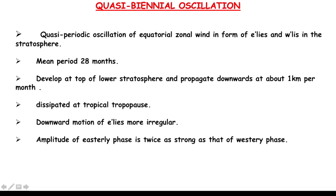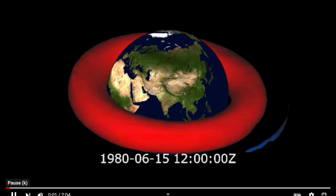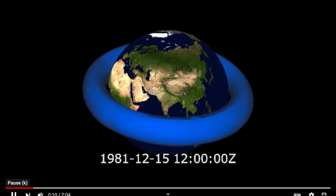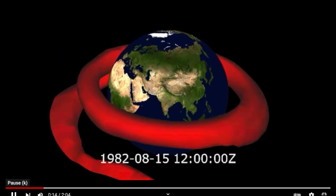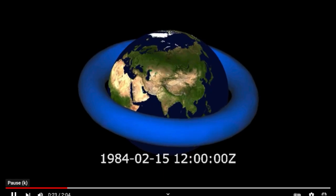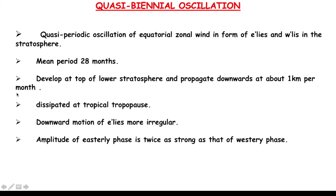Just above the equator in the lower stratosphere, you get easterly movement sometimes and westerly movement other times. The mean period of this cycle — which includes both easterlies and westerlies — is 28 months. In the animation, the red belt represents easterlies and the blue belt represents westerlies. Both wind belts move downward, with a mean period of 28 months, at a rate of 1 kilometer per month.